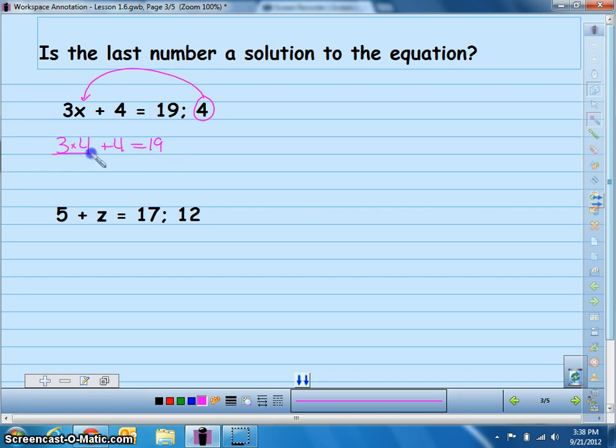Well, order of operations, I have to do this first. 3 times 4 is 12. 12 plus 4, does that equal 19? 12 plus 4 is 16. 16 does not equal 19. So this would be false.